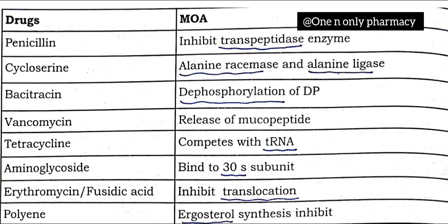First one is penicillin — it's an antibiotic. Its mechanism of action: it inhibits the transpeptidase enzyme and inhibits microorganism growth. Just remember the key words: penicillin inhibits transpeptidase. Second one is cycloserine.